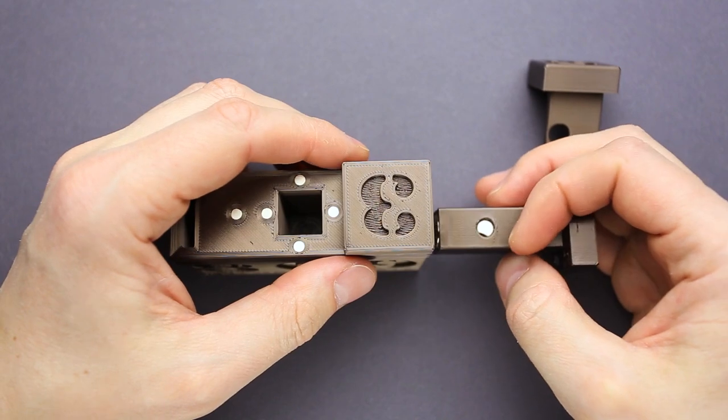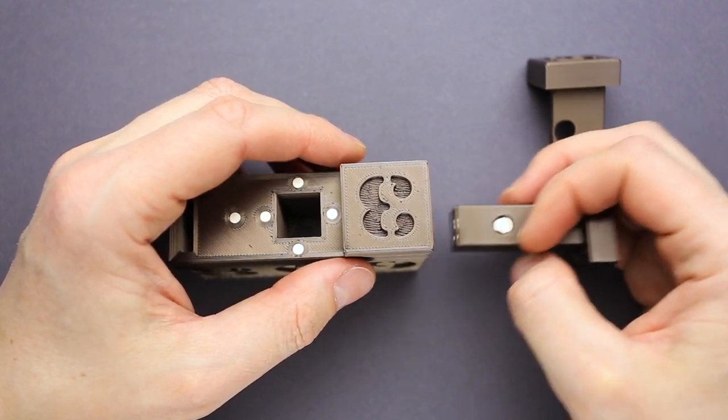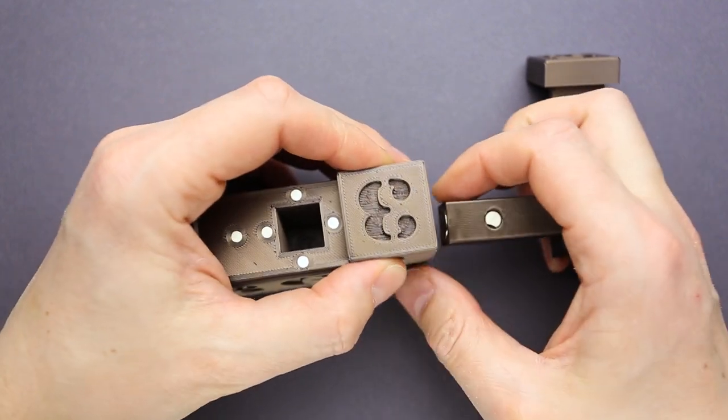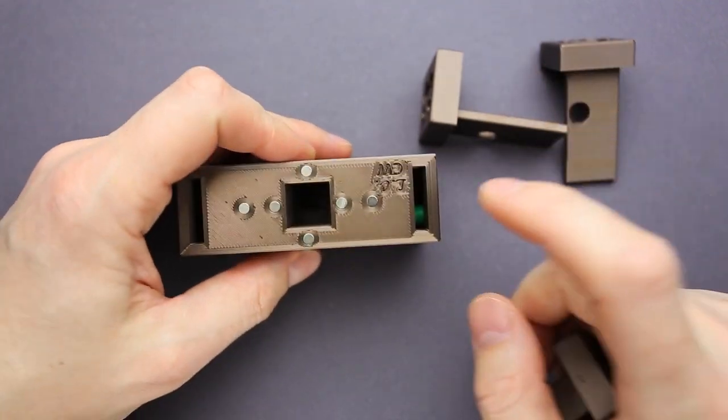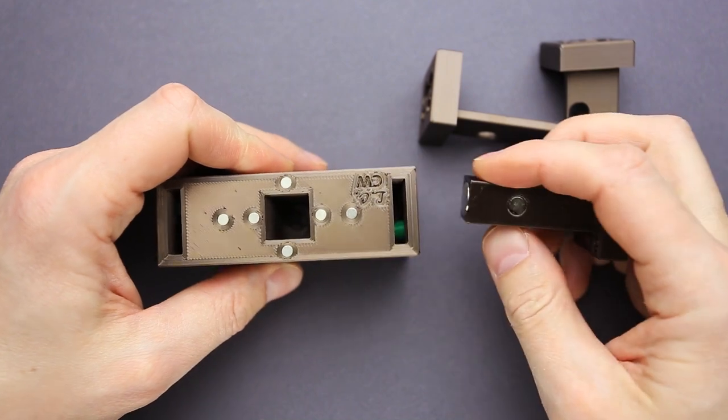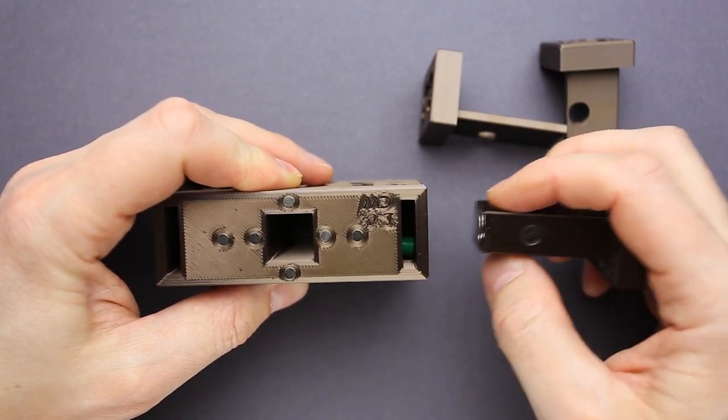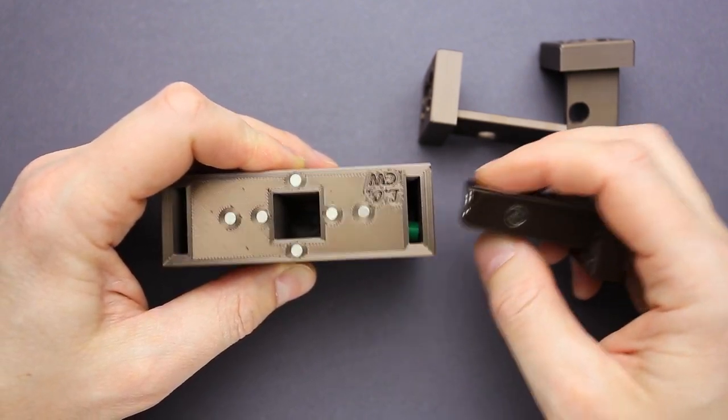Okay, maybe the same happens on this side. Yeah, something is moving. Let's try to remove the piece. Oh yeah, the piece is removed. And again, the same green part, which I can actually move with the magnet.